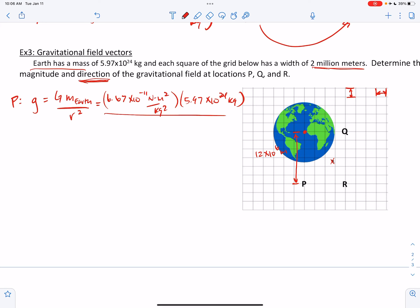And we are a distance of 12 times 10 to the 6th meters away. Don't forget to square it. So we end up getting a field strength of 2.77 newtons per kilogram at location P.